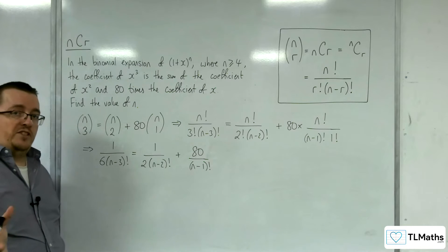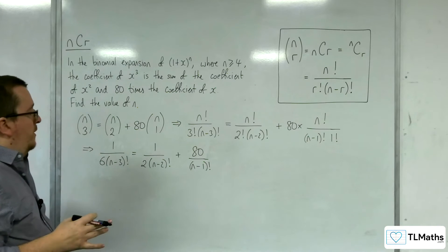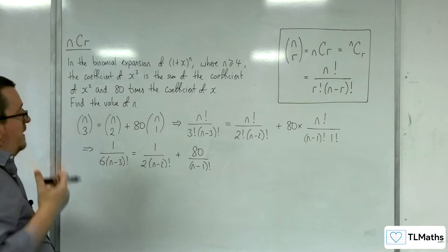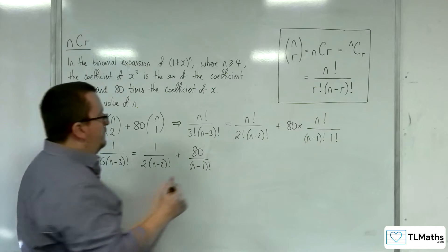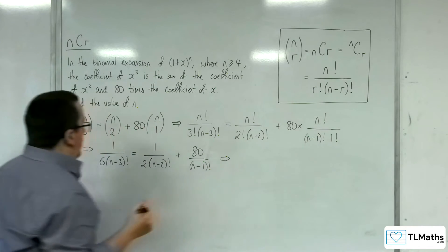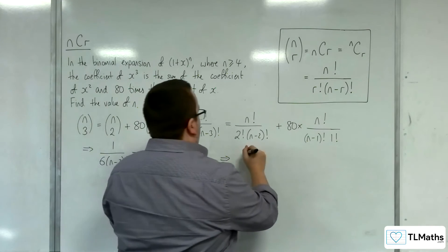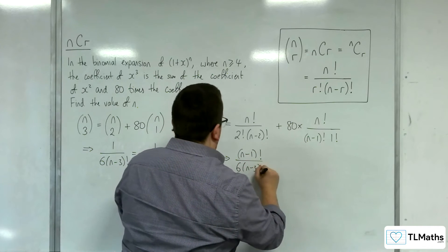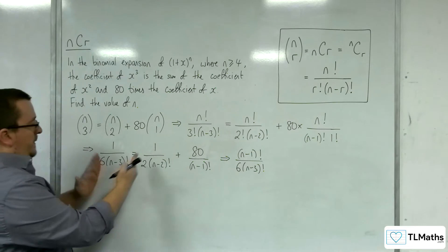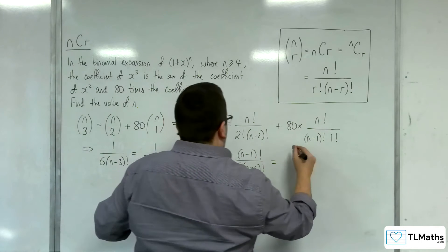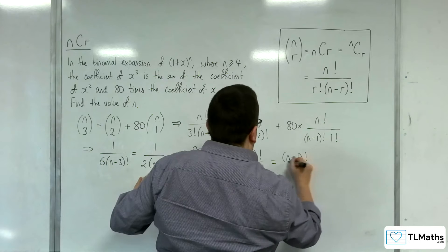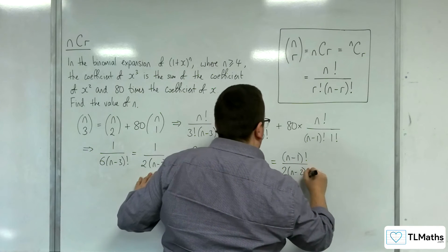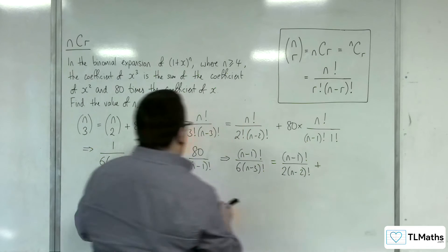The next step, just as in all the other examples we've gone through, I'm going to multiply through by the largest factorial, which is the (n-1) factorial. So multiplying through by that, I get (n-1) factorial over 6 times (n-3) factorial, equals (n-1) factorial over 2 times (n-2) factorial, plus 80.